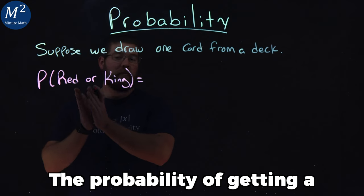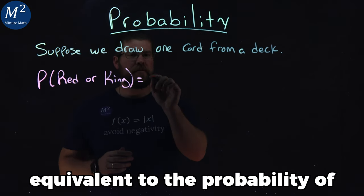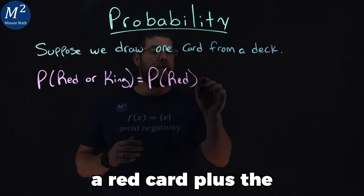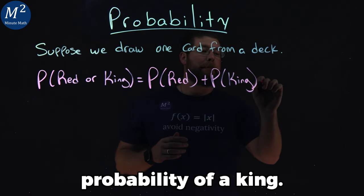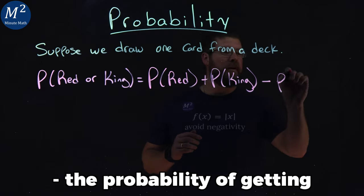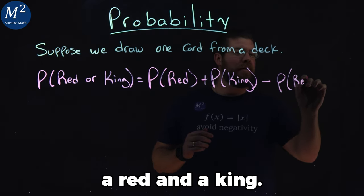The probability of getting a red or a king is equivalent to the probability of a red card plus the probability of a king minus the probability of getting a red and a king.